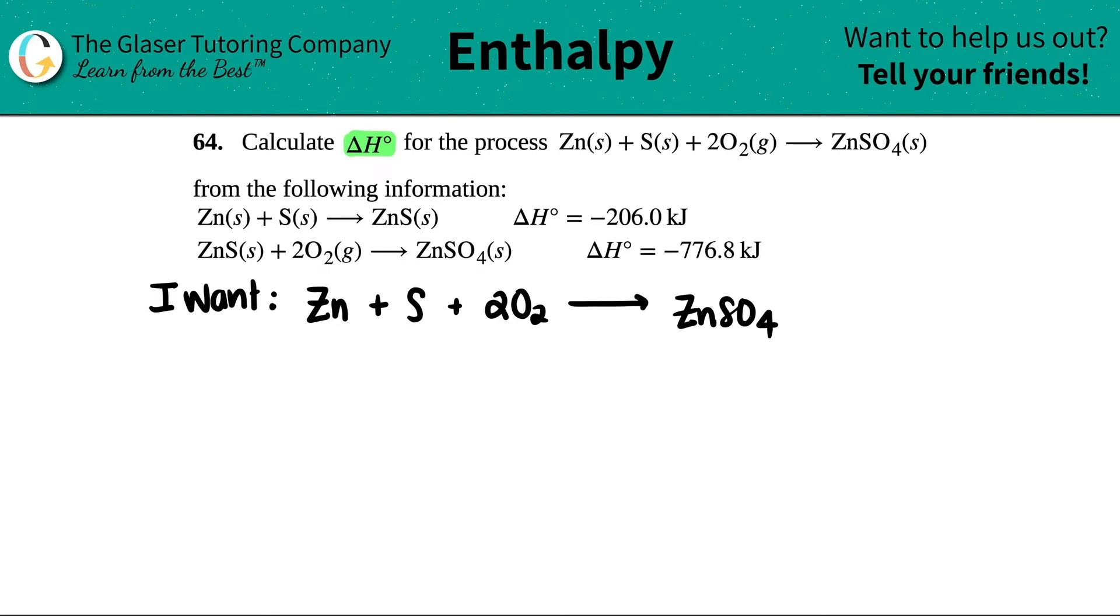Now, Hess's law is a very systemized type of process. What we're going to do is scan the equation that we want from left to right, and we only work with one substance at a time. So we're starting with the left-hand side, and we're going to look at the Zn. Focus in on one substance at a time.